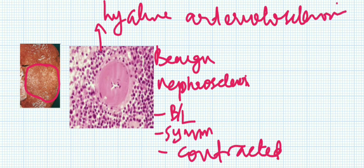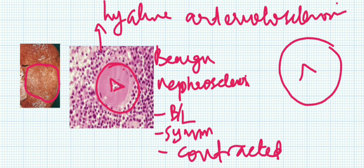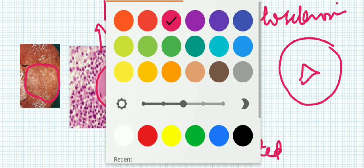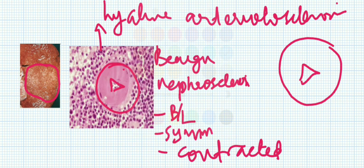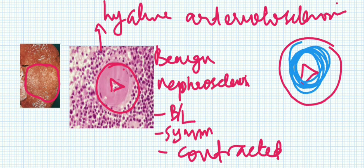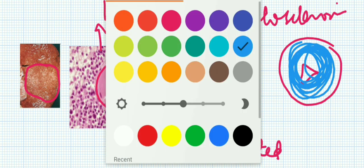Here you can see the arteriole - the lumen is very narrow and the entire lumen is filled with hyaline material. In the arteriole, the lumen is very narrow and filled with the hyaline material, which should be pink.